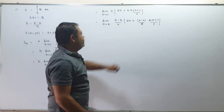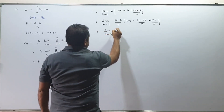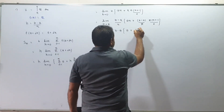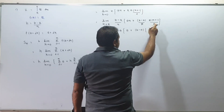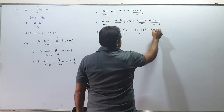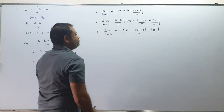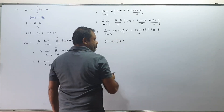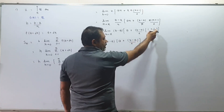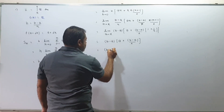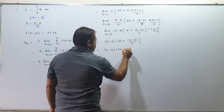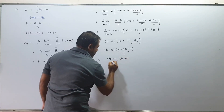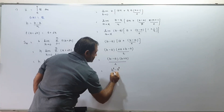Now as n tends to infinity: (b minus a) plus (b minus a) · (1 plus 1/n) / 2. As n tends to infinity, 1/n tends to 0. So we get: (b minus a) times [2a plus (b minus a)] / 2, which gives (b plus a)/2 times (b minus a), equal to (b² minus a²) / 2.